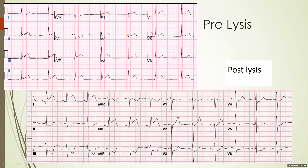So pre-lysis, you have an inferior wall MI with ST elevations in the inferior leads. Post-lysis, the ST elevations in the inferior leads have disappeared and instead you now have ST elevations in the high lateral leads — a high lateral wall MI. Pre-lysis: inferior wall MI. Post-lysis: lateral wall MI.